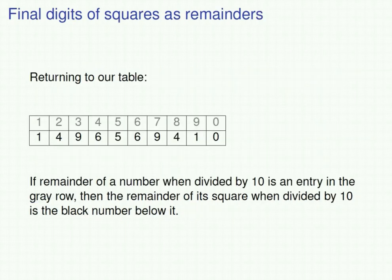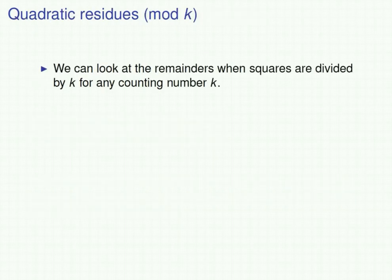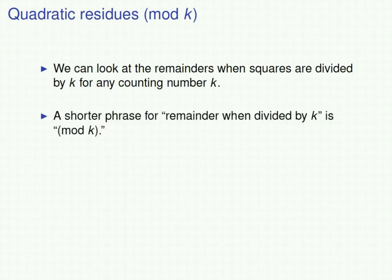Returning to our table, we can reinterpret it as saying that if the remainder of a number when divided by 10 is an entry in the gray row, then the remainder of its square when divided by 10 is the black number below it. When we think about things this way, we see that we can look at the remainders when squares are divided not only by 10, but by k for any counting number k. Because we're going to be talking a lot about remainders when numbers are divided by k, we'll abbreviate 'remainder when divided by k' with mod k.